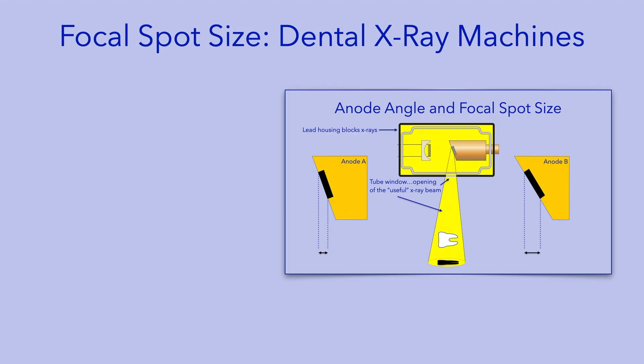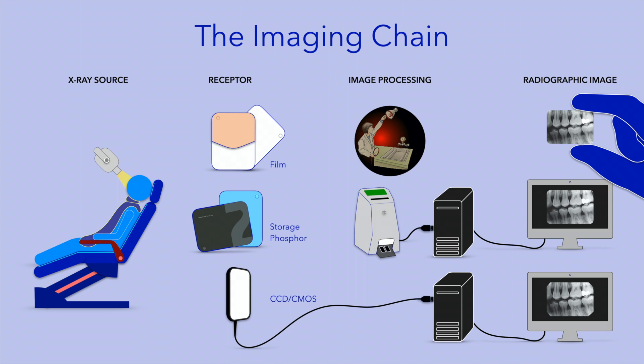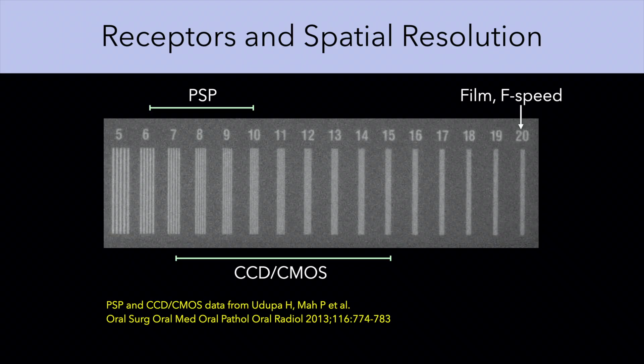The focal spot size is an important determinant of image resolution. In dental x-ray tubes, the anode is angled so that the effect of focal spot size is smaller than the area of x-ray production. The size of the focal spot in dental x-ray tubes varies from 0.4 to 0.7 millimeters; a smaller focal spot size will yield an image with a higher resolution. When using F-speed film, resolutions of 20 line pairs per millimeter or higher were achievable. The resolution of current digital receptors is lower; CCD or CMOS-based systems range from 7 to 15 line pairs per millimeter, and PSP systems range from 6 to 10 line pairs per millimeter.